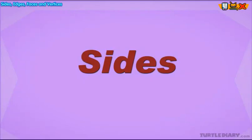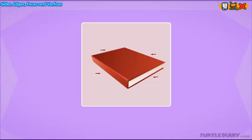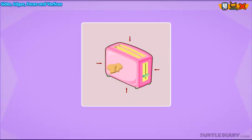Sides. Most shapes are identified by the number of sides they have. When you look at a shape, you know what kind of shape it is because of the number of sides it has.